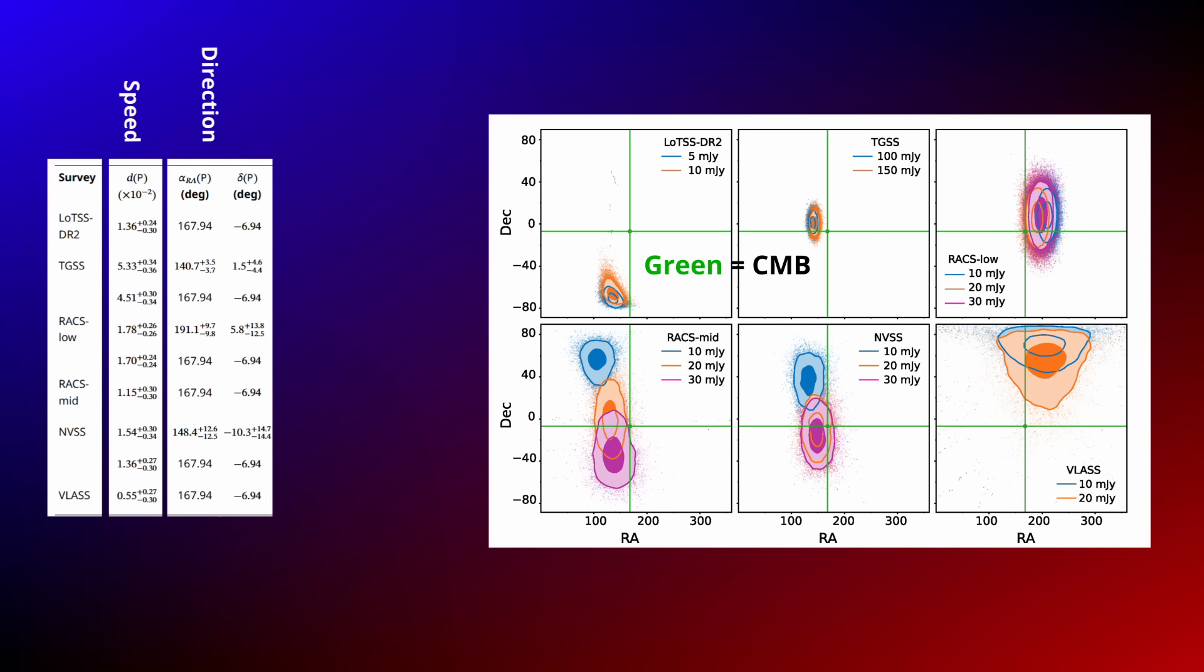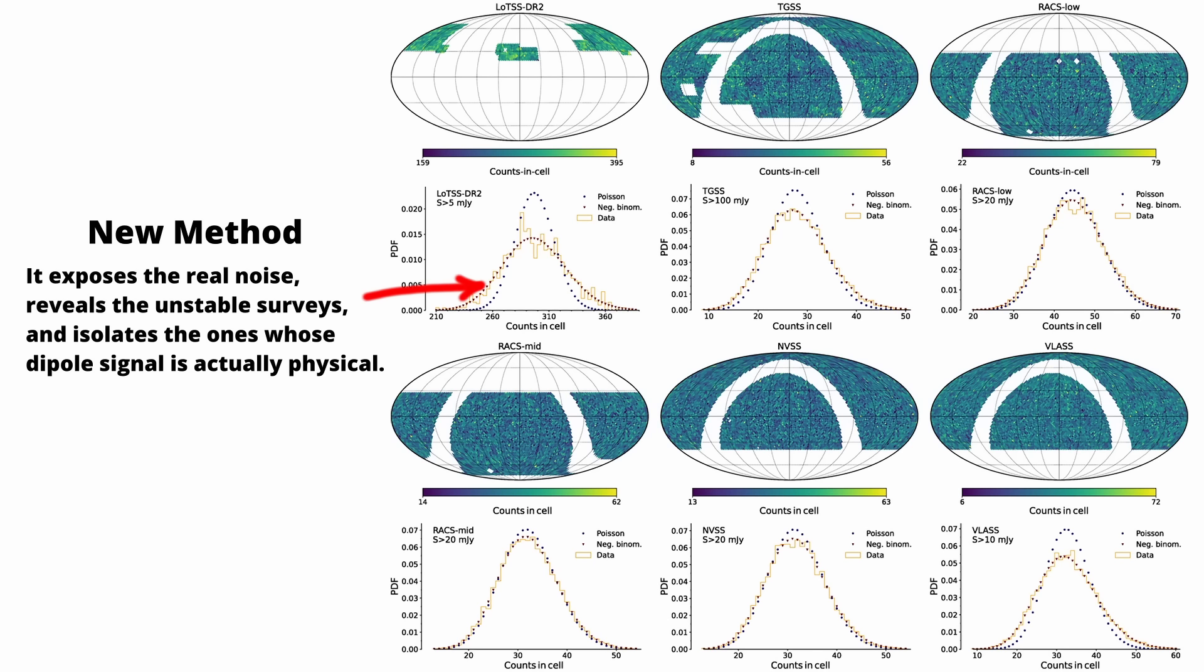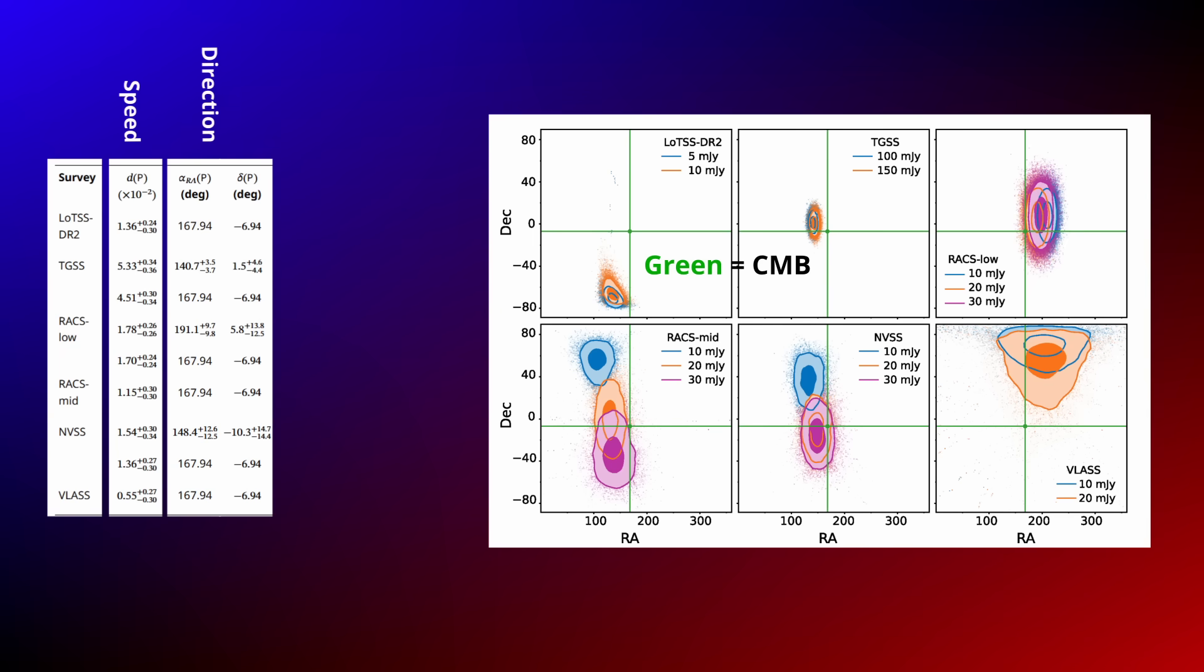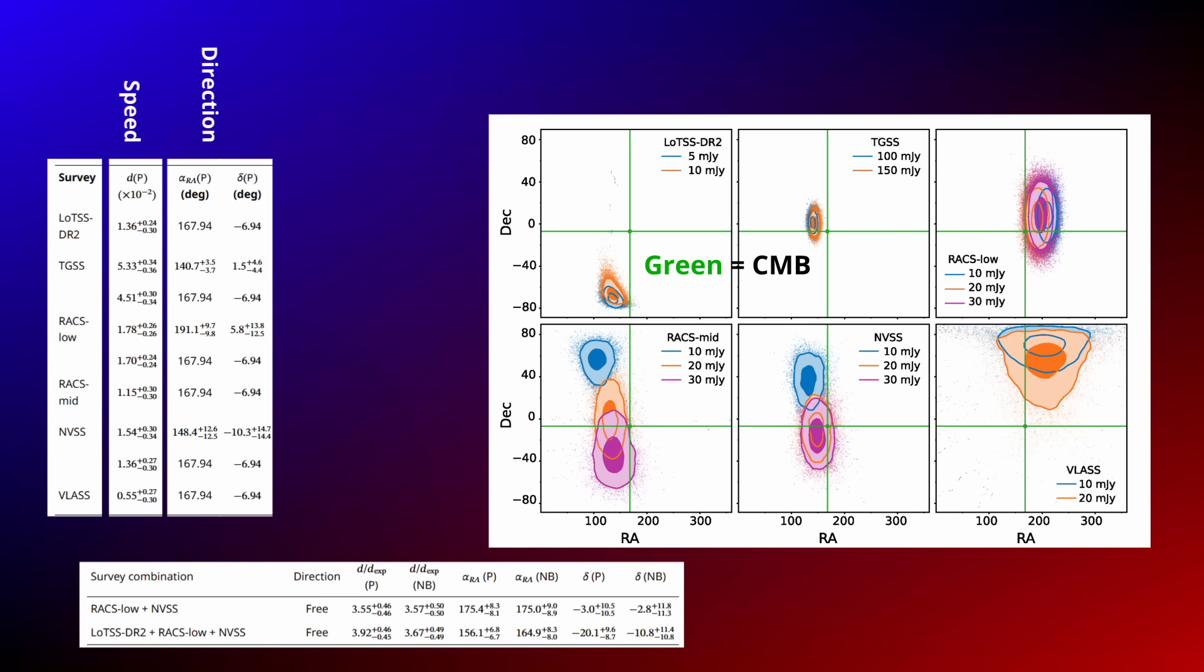The new study fixes this. Instead of pretending that every dot on the sky is its own galaxy, it uses a more realistic method. One that treats each radio source as a little cluster of possible components. That means the expected variations in the data are larger and the uncertainties are wider. But now they actually match how radio galaxies behave in real life. What changes isn't the dipoles themselves, it's our ability to see the ones that are real. Once you use the correct noise model, only two surveys remain stable enough to trust. And when you combine just those, the dipole snaps into focus. Pointing in the same direction of the CMB, but with nearly four times the speed.